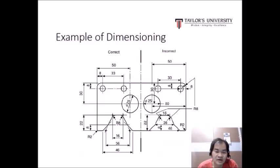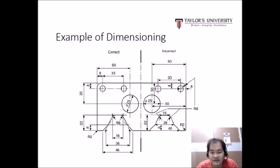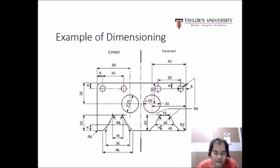Here is an example of dimensioning. The left hand side shows a correct dimensioning while the right hand side shows incorrect dimensioning. Dimensions such as 16, 36, and 46 should be grouped together as shown on the correct example.